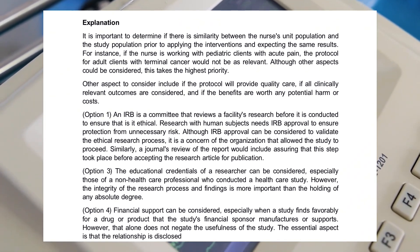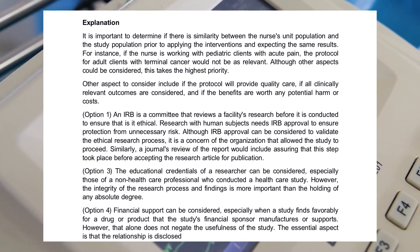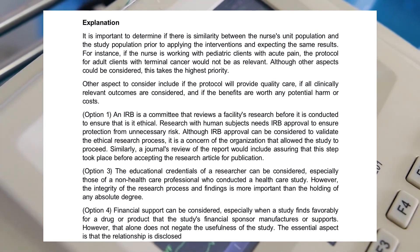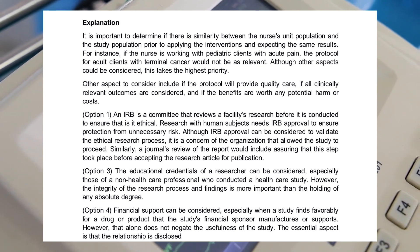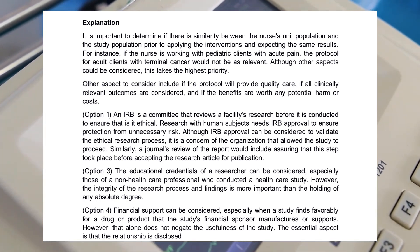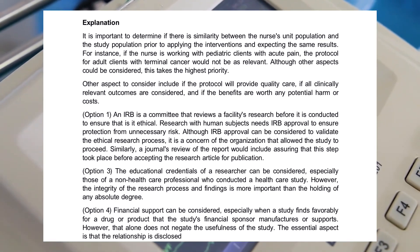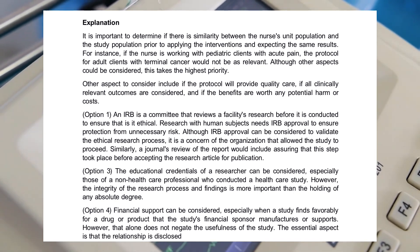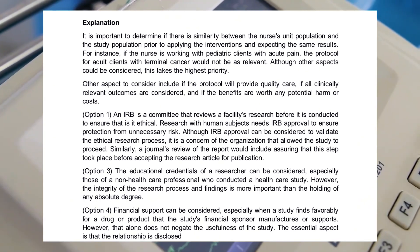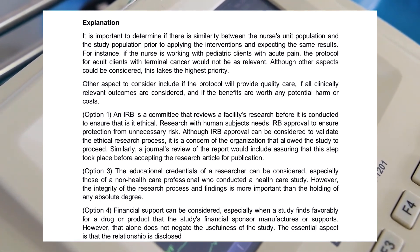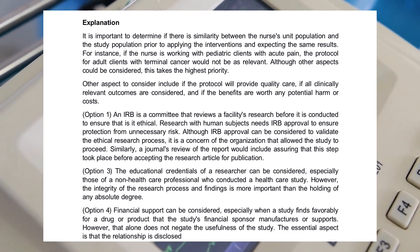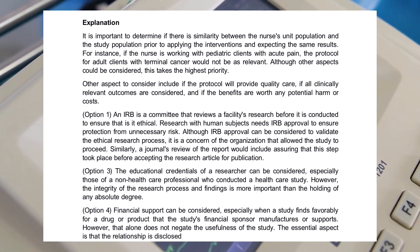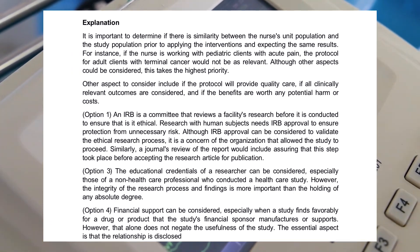Option 1: An IRB is a committee that reviews a facility's research before it is conducted to ensure that it is ethical. Research with human subjects needs IRB approval to ensure protection from unnecessary risk. Although IRB approval can be considered to validate the ethical research process, it is a concern of the organization that allowed the study to proceed. Option 3: The educational credentials of a researcher can be considered, especially for a non-healthcare professional conducting a healthcare study; however, the integrity of the research process and findings is more important than holding any absolute degree. Option 4: Financial support can be considered, especially when a study finds favorably for a drug or product that the financial sponsor manufactures; however, that alone does not negate the usefulness of the study. The essential aspect is that the relationship is disclosed.